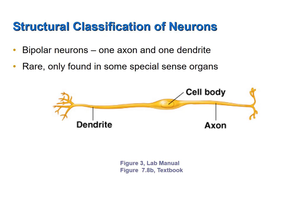If the cell has exactly two processes, it is a bipolar neuron. You may look at this neuron and think it has multiple processes. However, a process is specifically an extension from the cell body. Here's the cell body, here's one process, here's the other process. So this is a bipolar neuron. Bipolar neurons are rare in the human body. We have some in some special sense organs, such as the eyes.